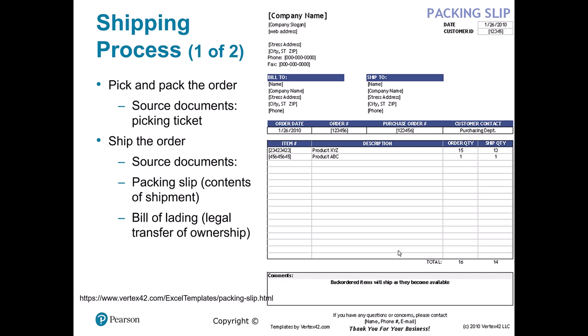Now let's dive into the shipping process. This is an example of a packing slip — we pick these products from the warehouse, put them in a truck, and send them to our customer. A packing slip lists the contents of what's inside. A bill of lading addresses when legal ownership actually changes — do we transfer ownership when we hand it to FedEx, or when FedEx delivers it? That's important because it affects when we reduce inventory. One key thing to notice on the packing slip is that there's no money on it — just quantities ordered and quantities included.